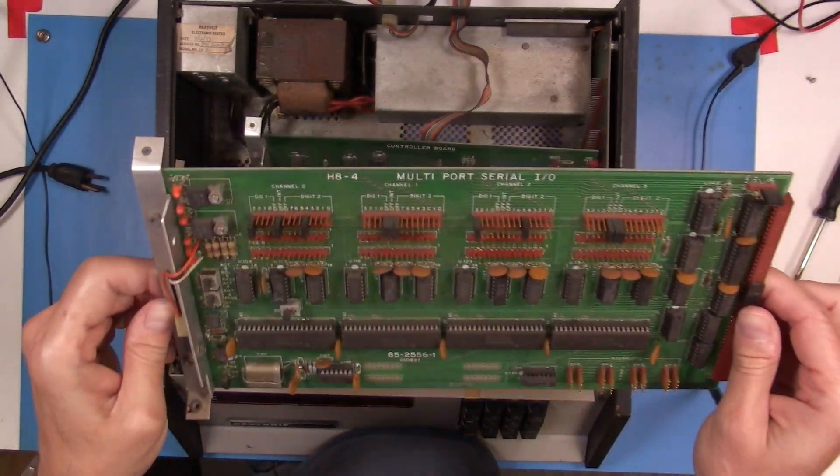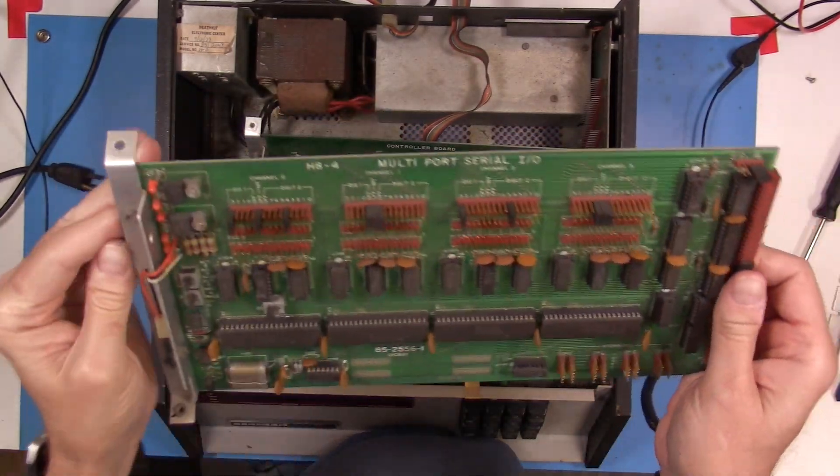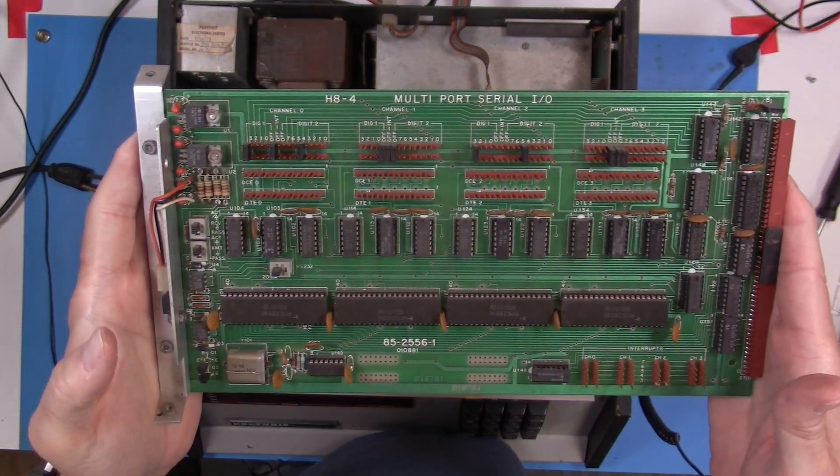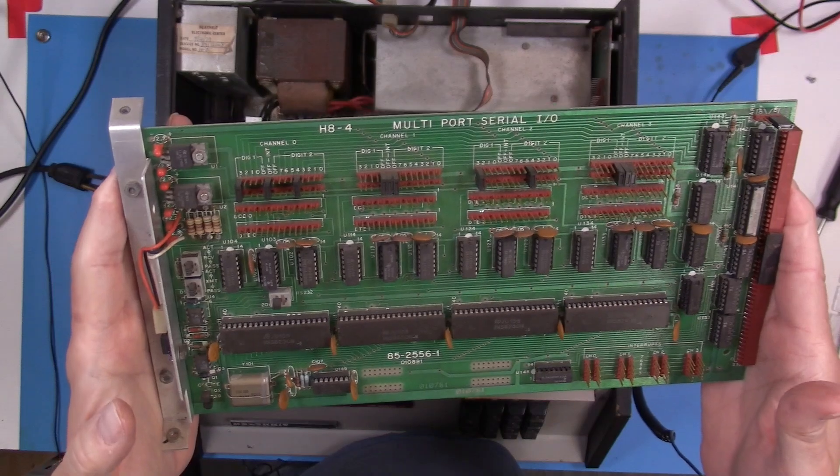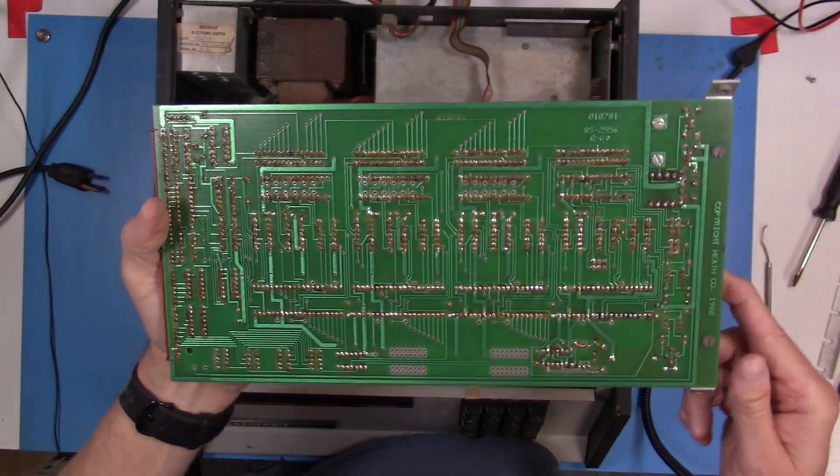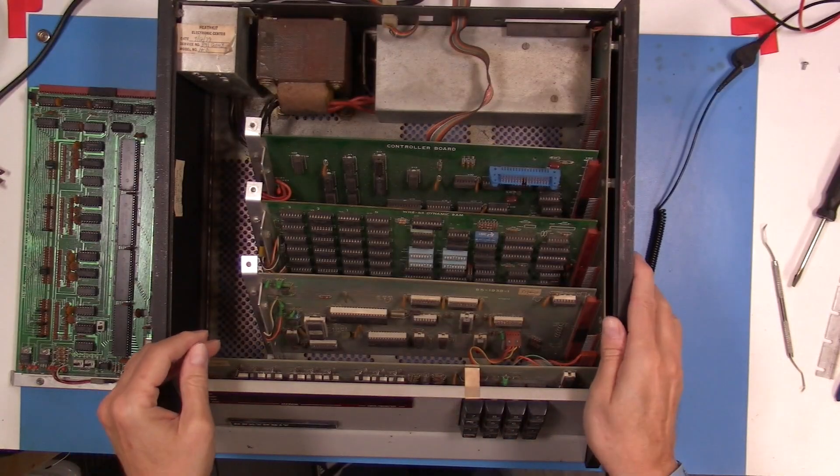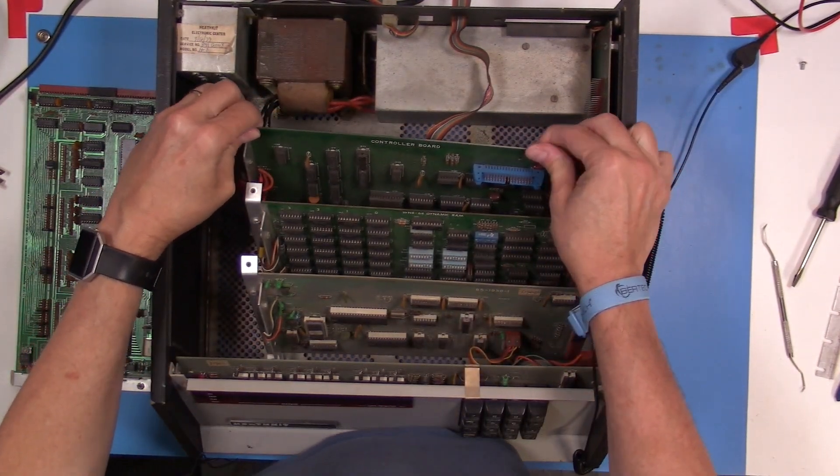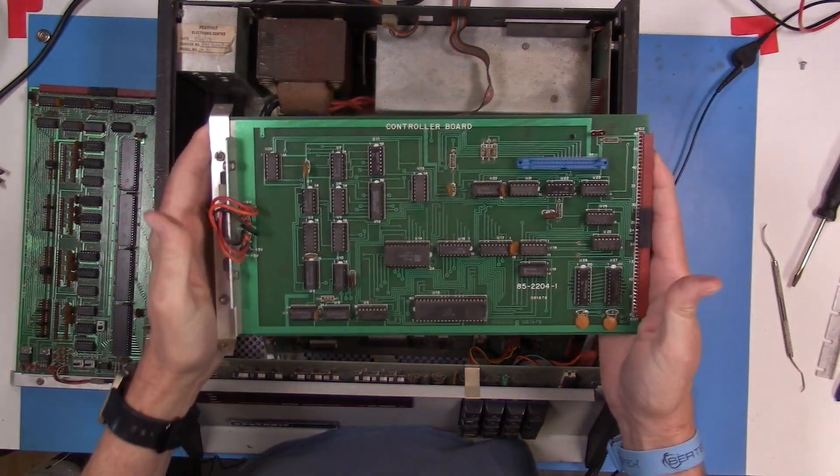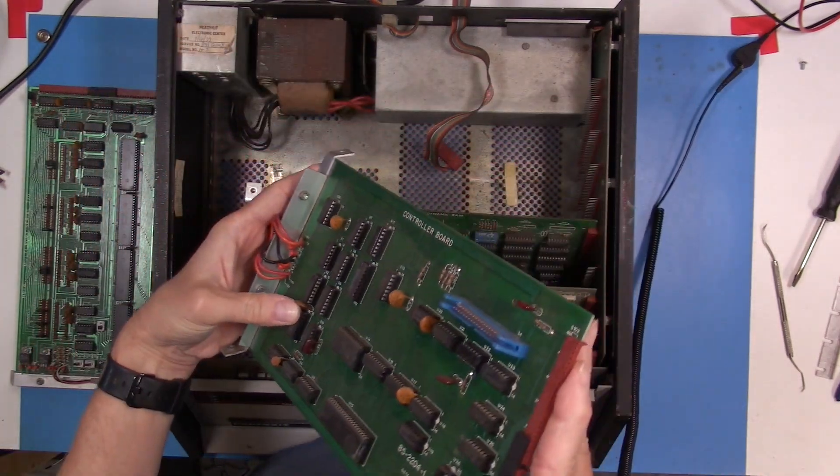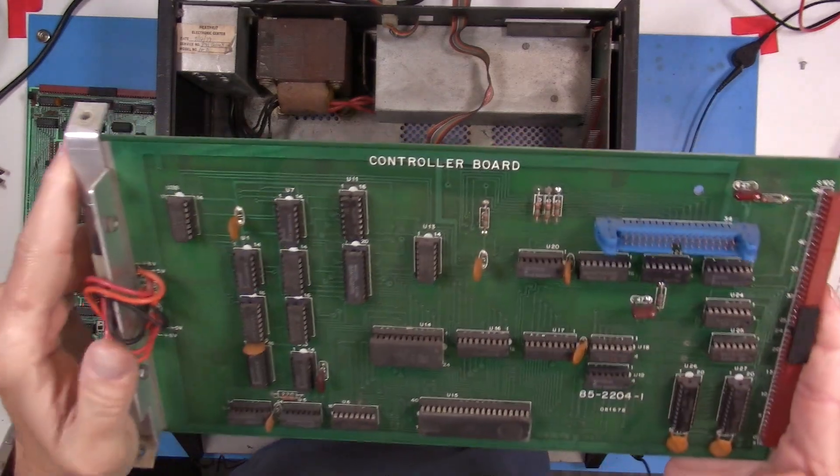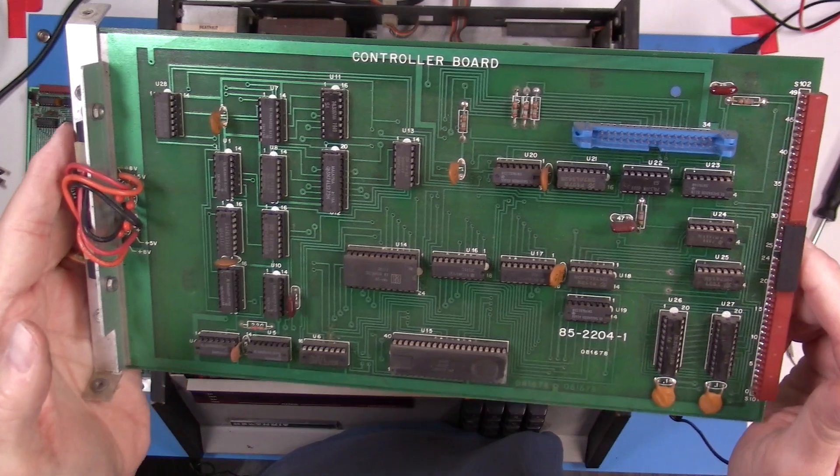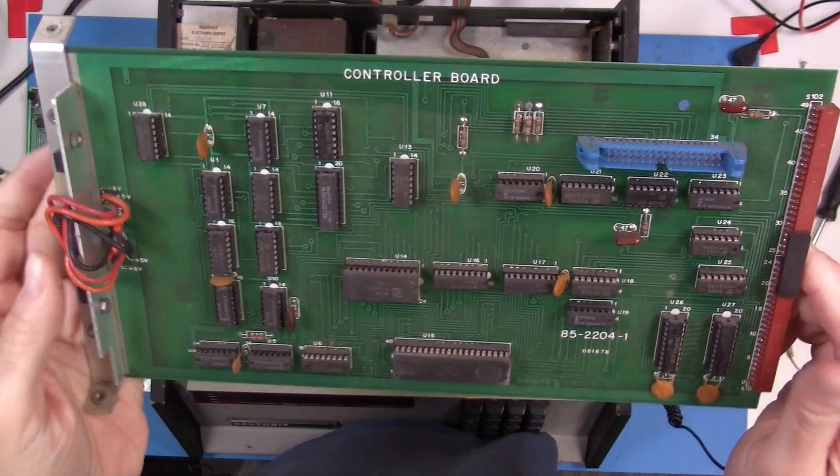I'm just going to do a visual inspection of the cards, look for anything obvious, missing parts, any of the cards that have tantalum capacitors, just double-checking to see if any of those might be damaged. That's a common fault on a lot of old computer PCBs. And then you can see the next card out here is for the disk control.